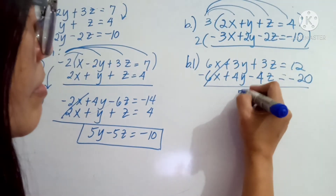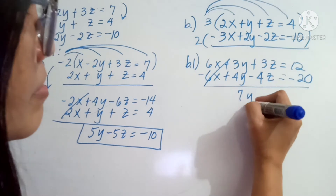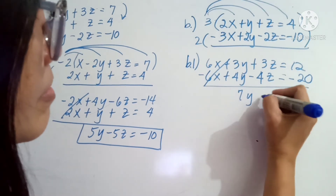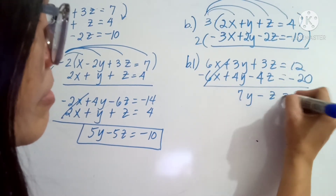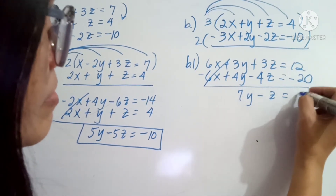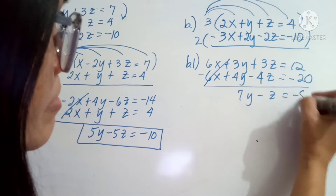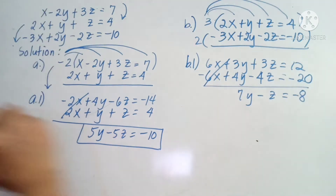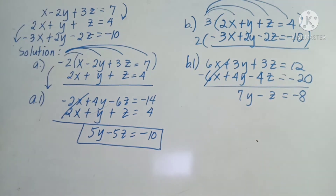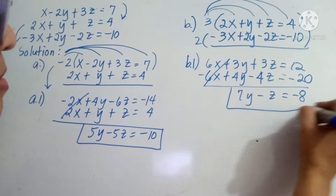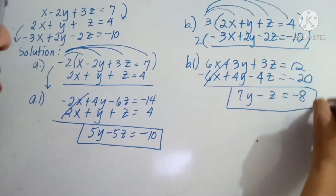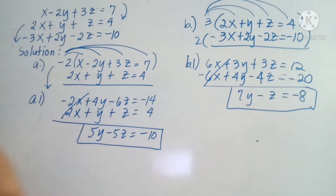We ended up with 6x minus 6x. Just like what I said, x ang i-eliminate. Now, combining like terms. We have now the new equations.